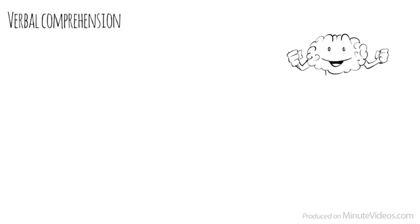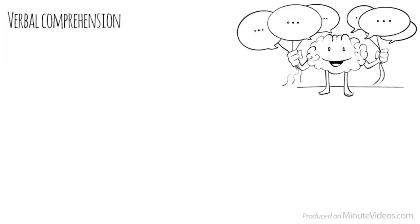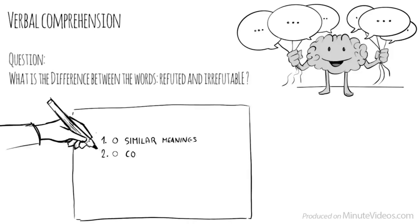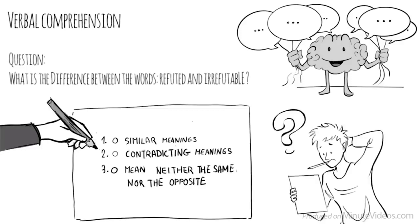The third section was verbal comprehension, which measures our ability to access vocabulary, express ourselves in a meaningful manner, and apply reasoning skills to information presented verbally. In the first question, it said, what is the difference between the words refuted and irrefutable? Do they have similar meanings, have contradicting meanings, or mean neither the same nor the opposite? They must have contradicting meanings.